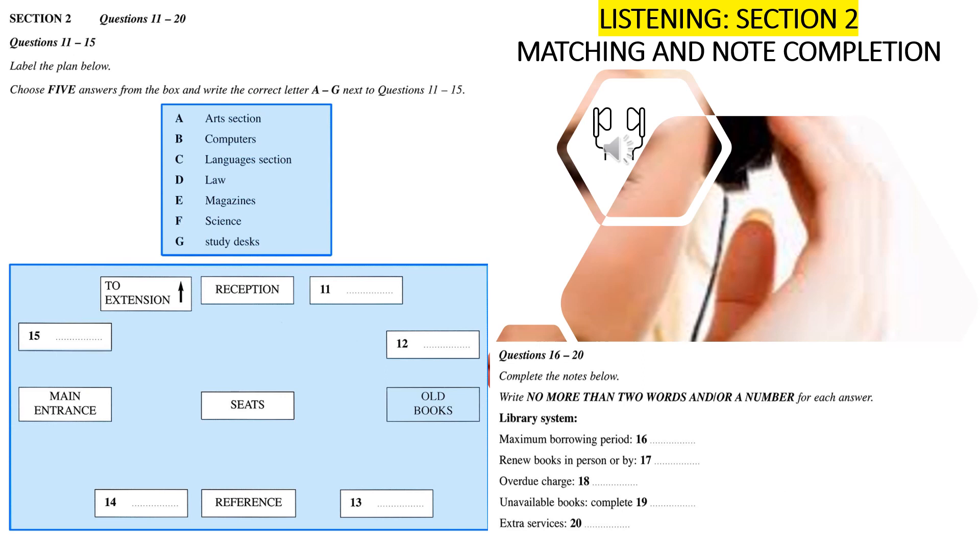That used to be the science section. But now, on those shelves, you'll find the arts section. We had a big reorganisation in the summer, which I think has made it clearer. The numbering is standard, so you should be able to find what you want quite easily. However, if you can't find something, it probably means it's been borrowed. OK.